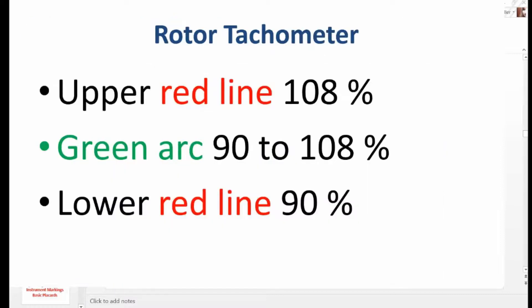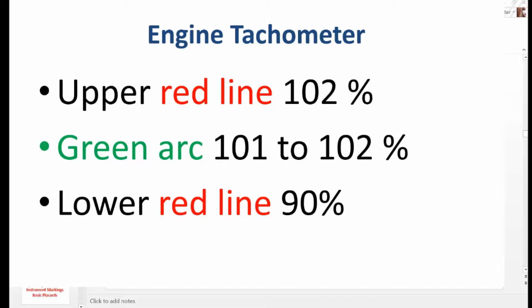Rotor tachometer, upper red line, 108 percent. Green arc, 90 to 108 percent. Lower red line, 90 percent. Engine tachometer. Upper red line, 102 percent. Green arc, 101 to 102 percent. Lower red line, 90 percent.